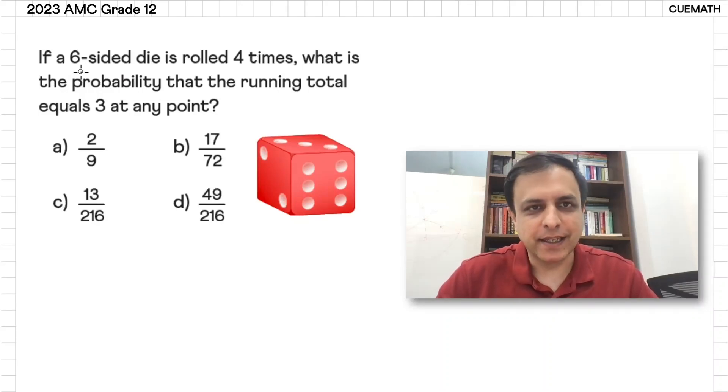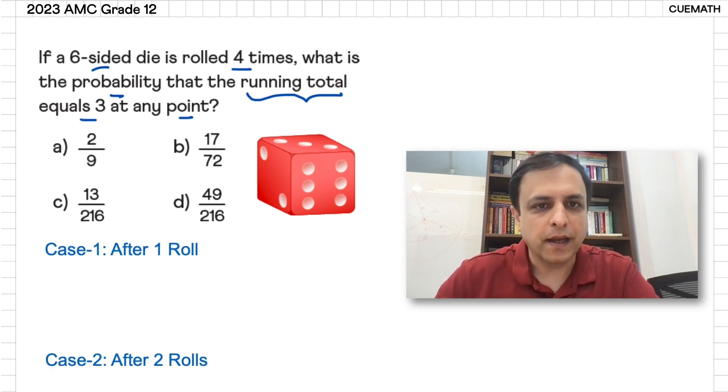Here's a cool probability question: if a six-sided die is rolled four times, what is the probability that the running total equals three at any point? The way to solve this problem is to break it down into cases. There are three cases where the running total equals three: after one roll, after two rolls, and after three rolls.